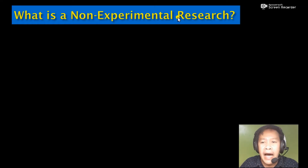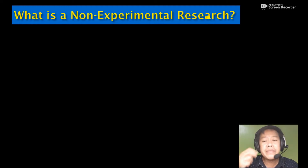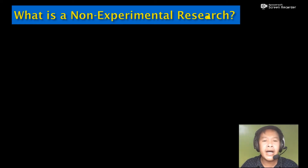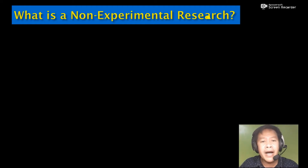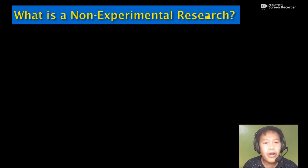We are going to talk about non-experimental research. Non-experimental research is the opposite of experimental research. As a review, experimental research is a type of quantitative research in which it undergoes the experimentation stage. We have the pretest, the experimentation stage of a minimum of 6 weeks, and after that, the post-test. Prior to the pretest, we administer a standardized test to determine the initial academic performance of the two groups, ensuring both groups are at the same level of academic competence.